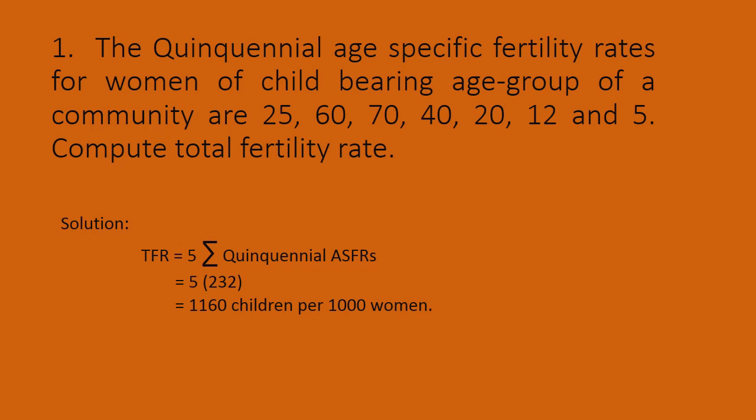...5. Compute the Total Fertility Rate. Here, the quinquennial age-specific fertility rates are given. The age-specific fertility rate is noted for each age group. For the 15 to 19 years age group, the fertility rate is 25.